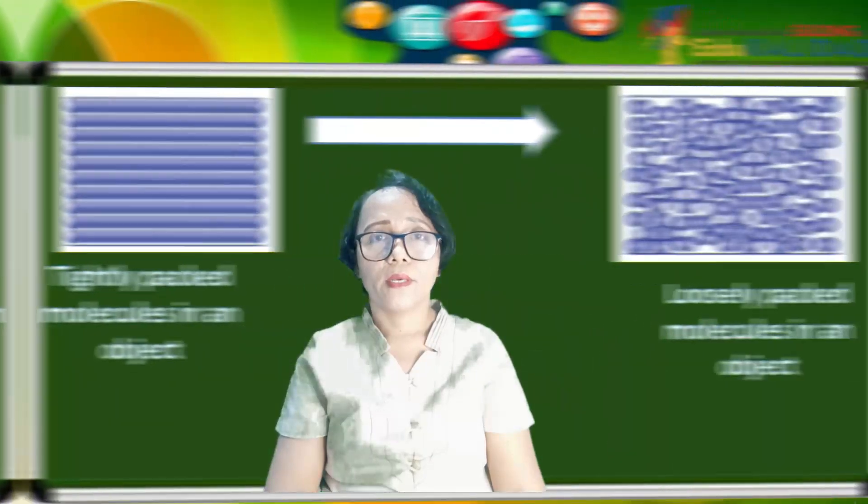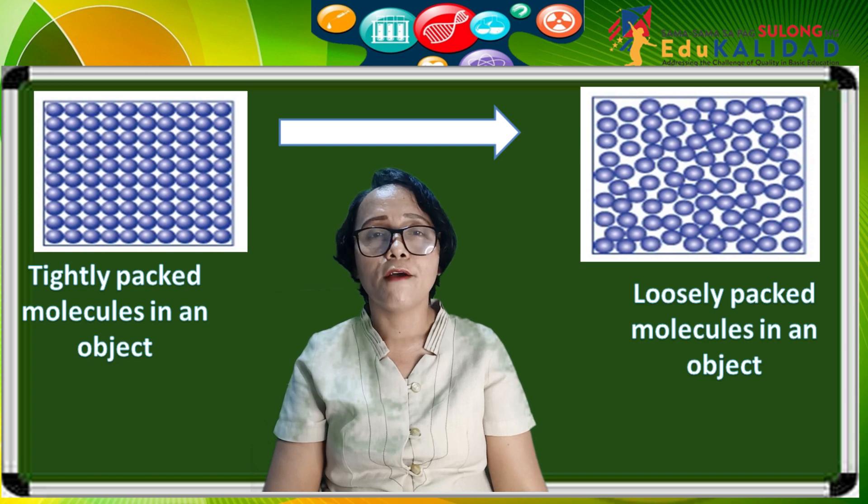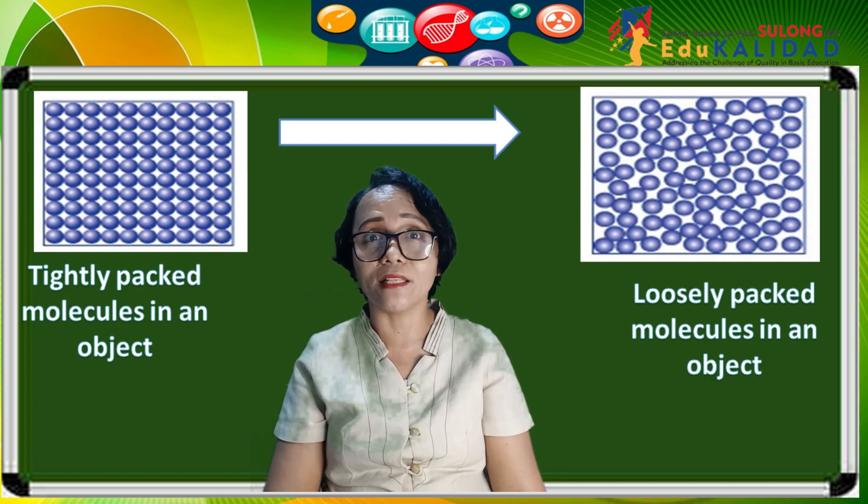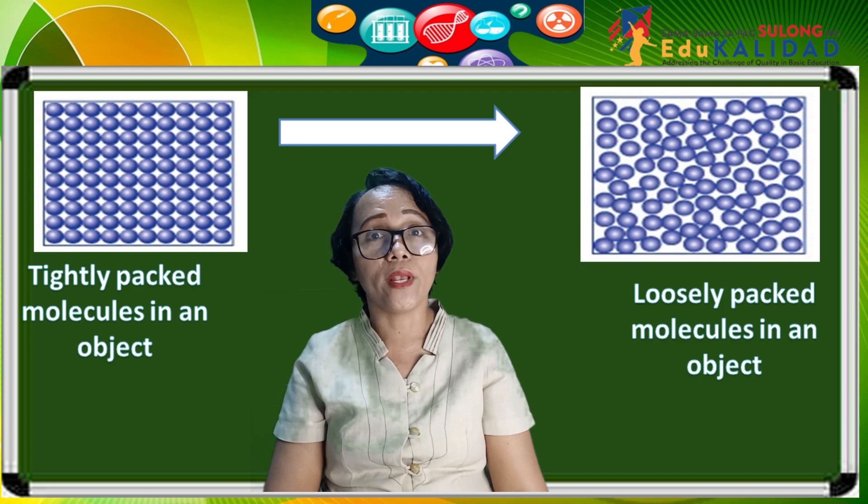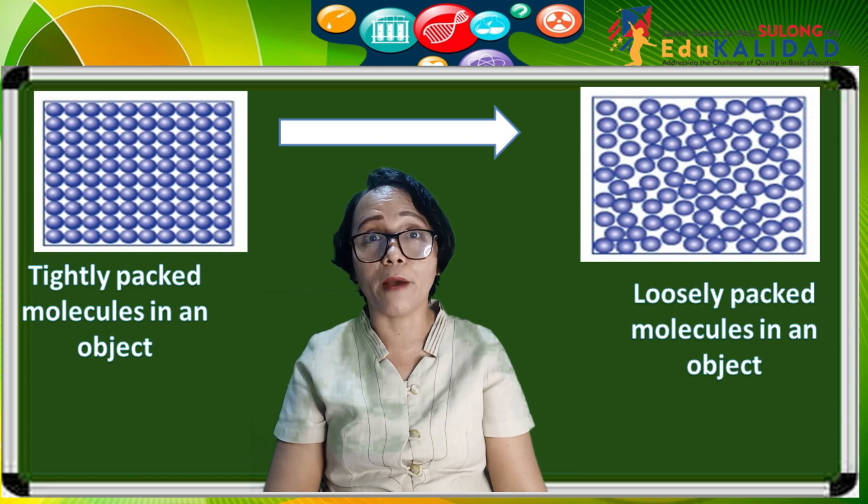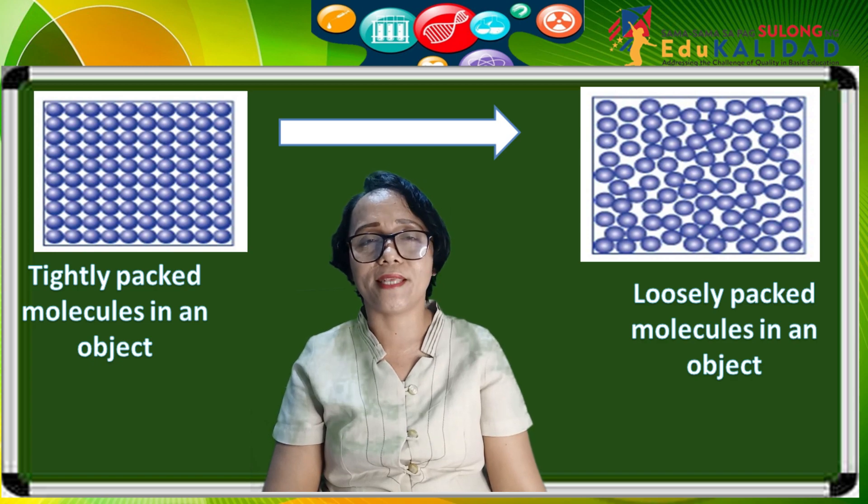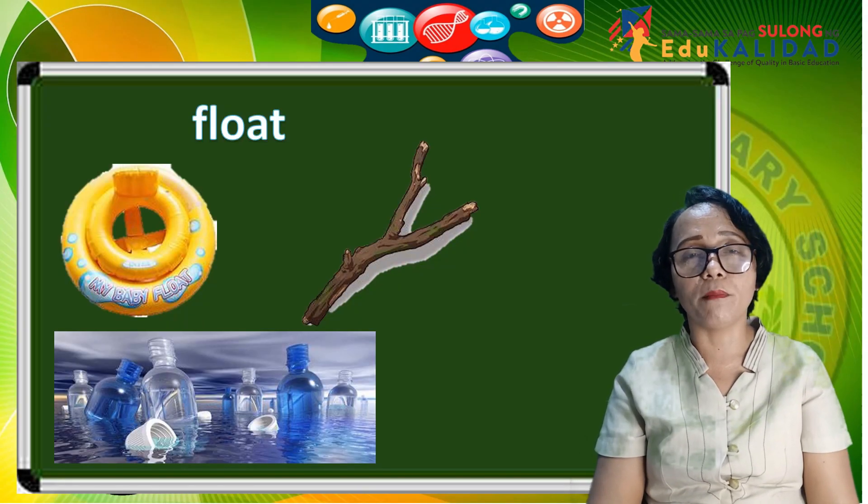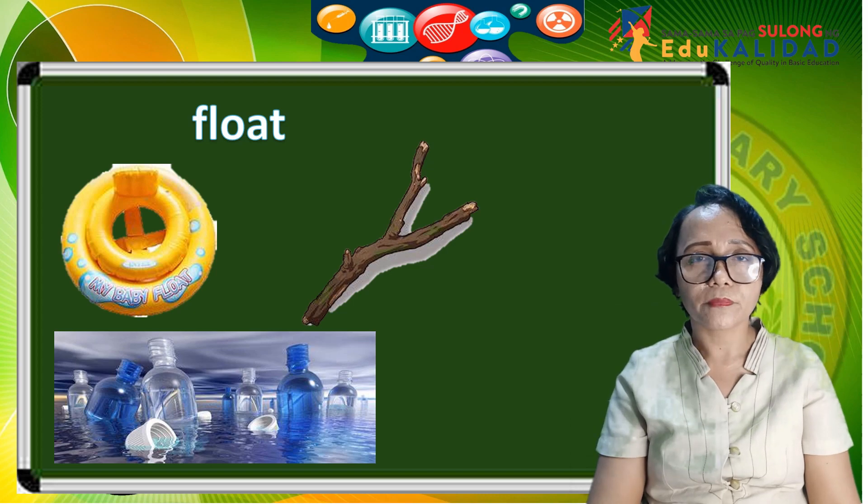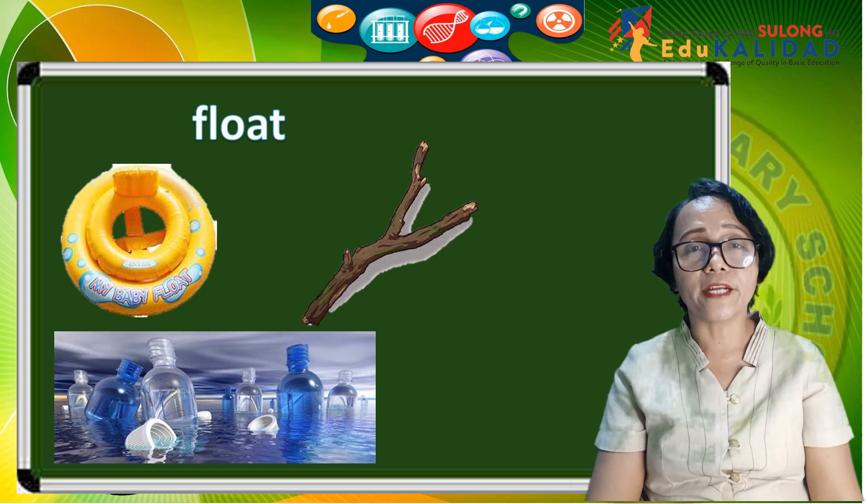We have also learned that materials with loosely packed molecules will float, while materials with tightly packed molecules will sink. Everything is made up of molecules. When the material is made up of loosely packed molecules then it will float, while if that material is made up of tightly packed molecules it will sink. The shape also of an object will make its ability to float. When an object has the ability to hold air it will float because air is less dense than water.